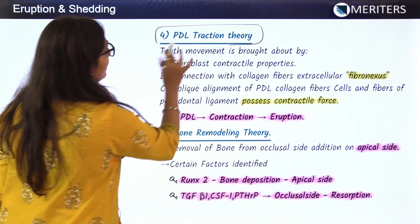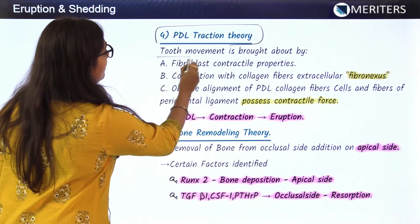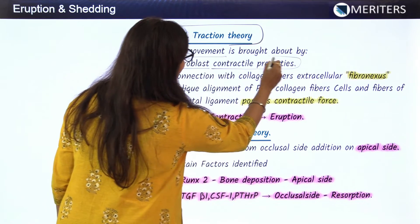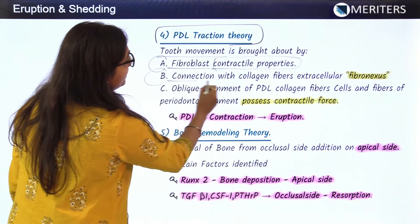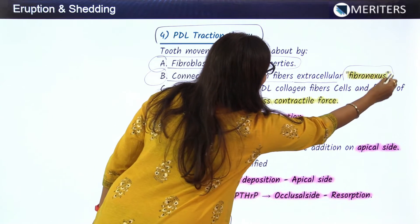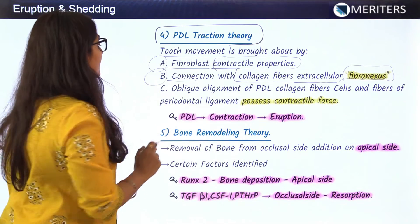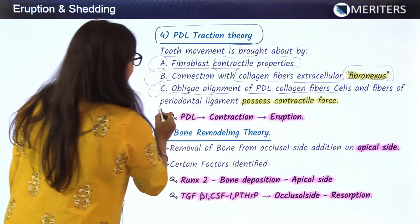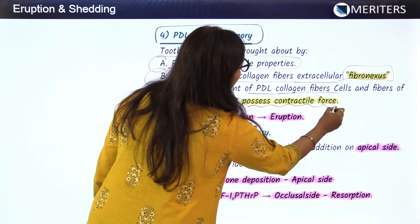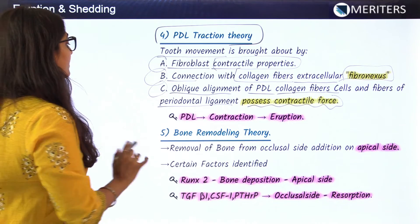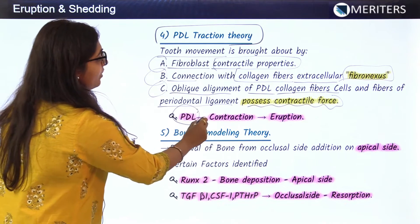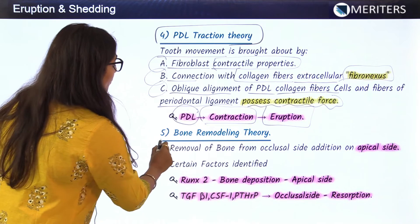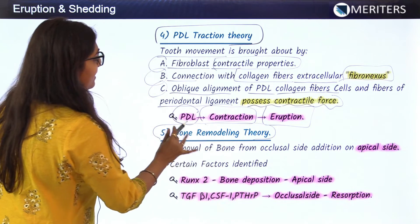The fourth theory is the PDL traction theory. It explains that tooth movement occurs due to three processes: (a) fibroblasts with contractile properties, (b) connection with extracellular collagen fibers also known as fibronexus, which helps in eruption, and (c) the oblique alignment of periodontal ligament collagen fibers. The cells and fibers of the PDL possess contractile force which leads to eruption of the tooth.